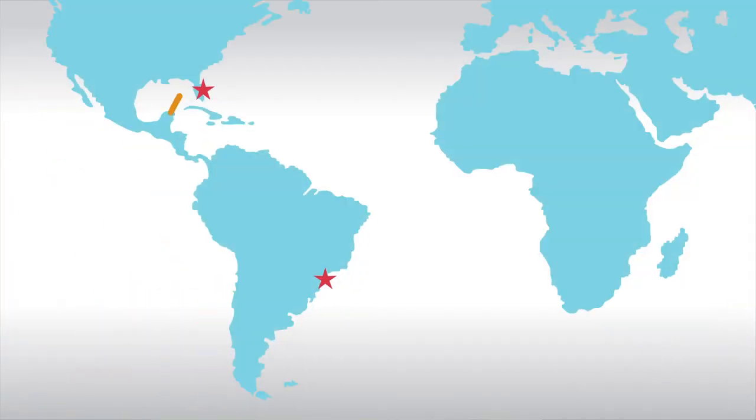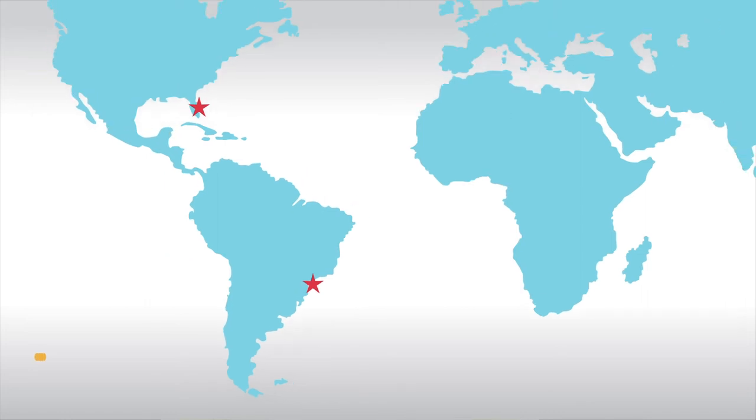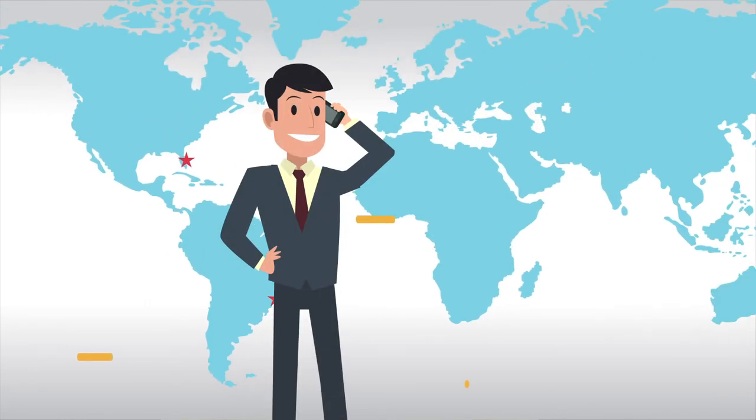Now here's an example of how to make an international phone call. Let's say you're trying to call a local number in Sao Paulo, Brazil from Miami, Florida, USA. To make this international call you're going to need the following.